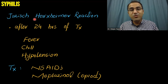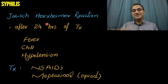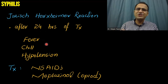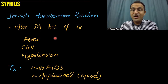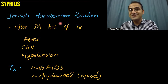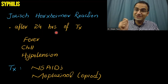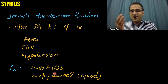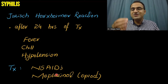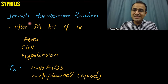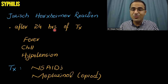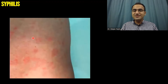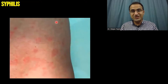A phenomenon seen 24 hours after treatment with penicillin G is called the Jarisch-Herxheimer reaction, in which the patient develops fever, chills, hypotension, and tachycardia. In the past, doctors were happy to see this reaction as a sign of treatment response. These days, it is treated with NSAIDs or the opiate meptazinol. This picture shows the rash that can appear during the Jarisch-Herxheimer reaction.